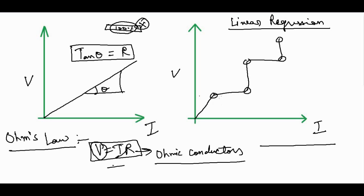What we can do is draw a straight line such that the distance from each data point to the line is as minimum as possible. We draw a straight line in such a manner that the difference between the actual value and the theoretical value is as small as possible. Let's name these distances d1, d2, d3, d4, and d5.